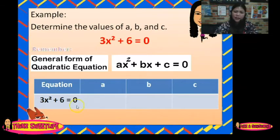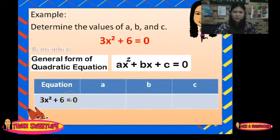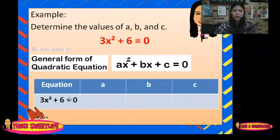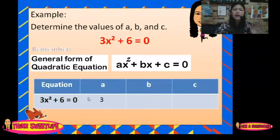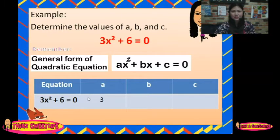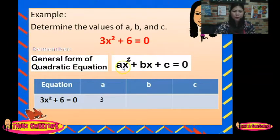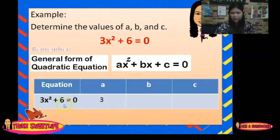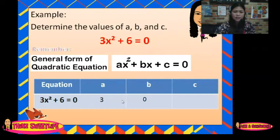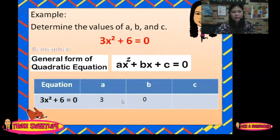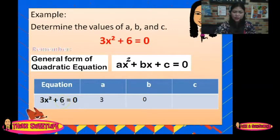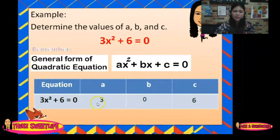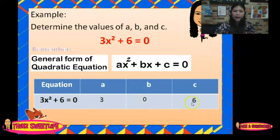What do you think A is here? Always remember to arrange in decreasing order to determine A, B, and C. The A is 3. How about B? From the general form, there is no X term here, so B is 0. How about C? There is a constant which is 6. So from the equation 3x squared plus 6 equals 0: A is 3, B is 0, and C is 6.